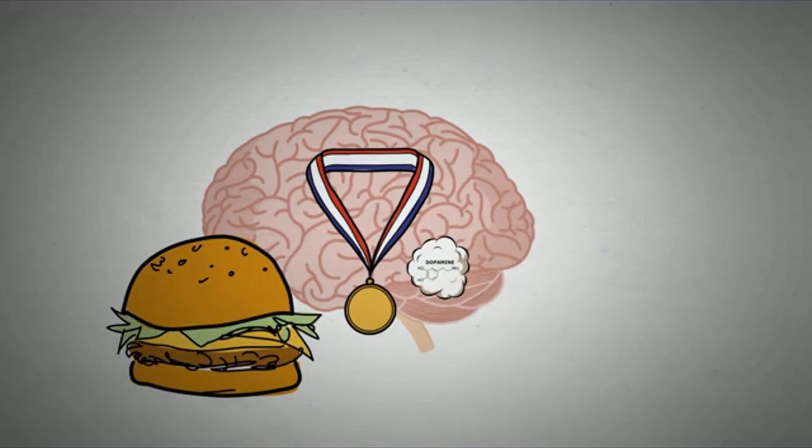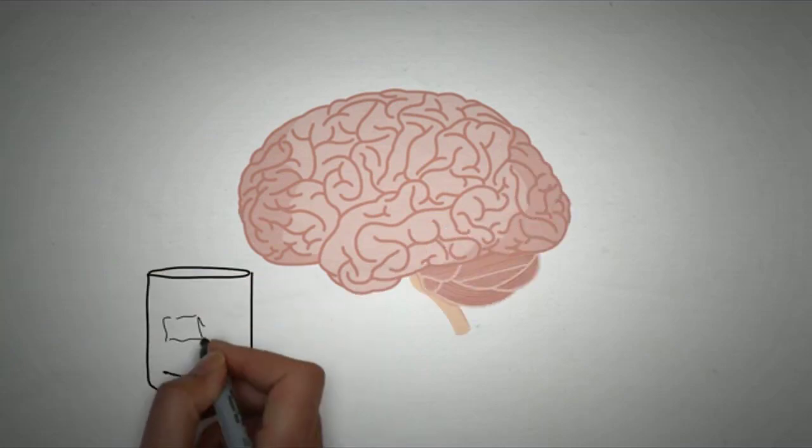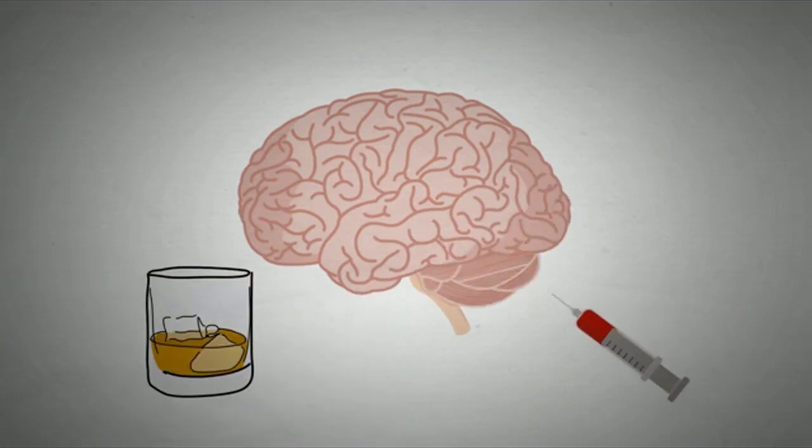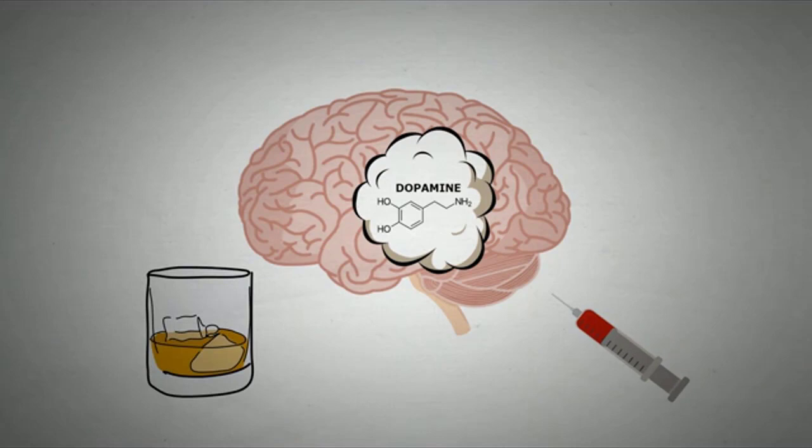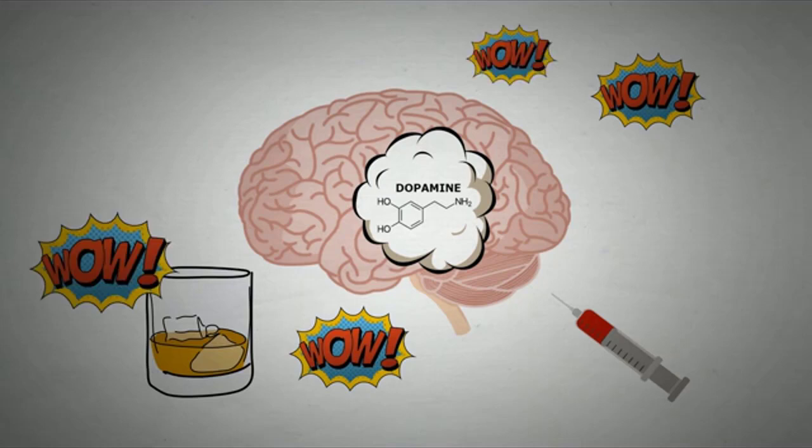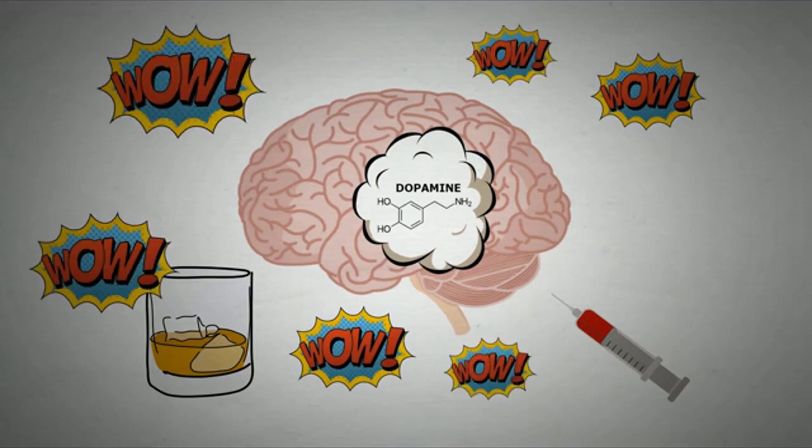Over stimulating this system, however, produces euphoric effects. Alcohol and other drugs can release two to ten times the amount of dopamine that natural rewards such as eating and sex do. This can happen almost immediately and last longer than any of the natural rewards we may receive.